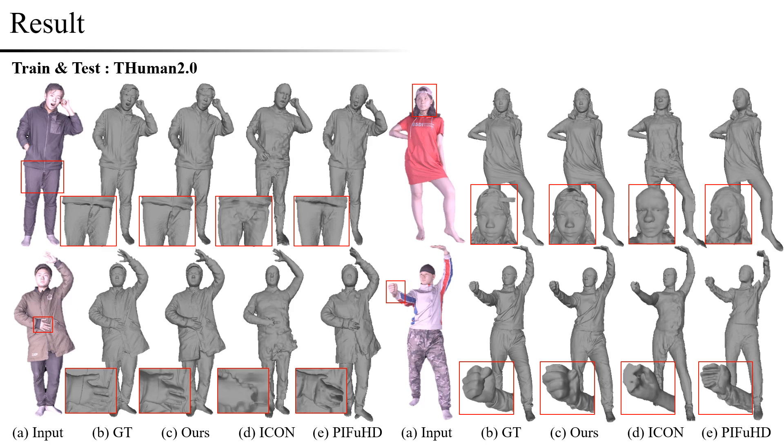Also, in the case of T-Human 2 dataset, our results also show superior performance in detailed observation. In particular, the surface of the face and fabric shows more smooth and detailed performance compared to other methods.